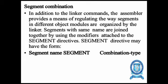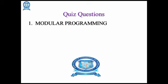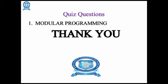In addition to the linker commands, the assembler provides means for regulating how segments in different object modules are organized by the linker. Segments with the same name are joined together using modifiers attached to the segment directives. Segment directives may have the form: segment name followed by segment combination type.